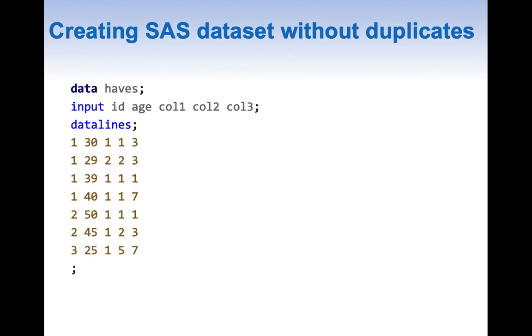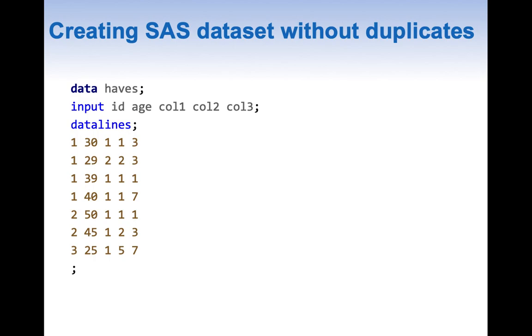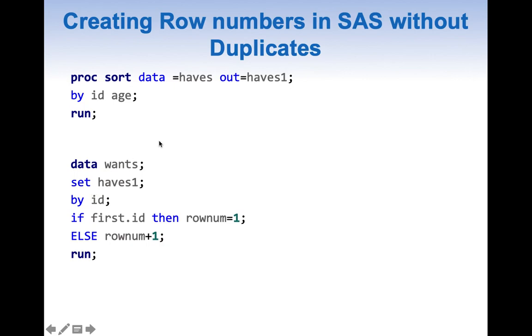Now let us quickly look into creating a SAS data set without duplicates. Here I have a SAS data set with columns like ID, age, column one, column two, column three. I'm going to do sorting on ID and age. There are no duplicates in the age and assigning row numbers is fairly simple. First we do procsort on ID and age. Once procsort is done we can use first dot ID logic and say if there is a first dot ID then row number equal to one else row number plus one.